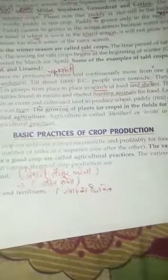Nomadic people ate fruits and vegetables found in nature and started hunting animals for food. This is how agriculture was born. The growing of plants in the field for obtaining food like wheat and rice is called agriculture. Agriculture is kheti.